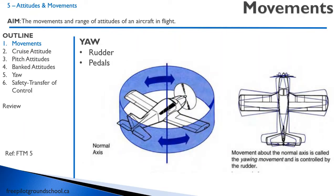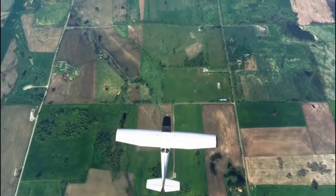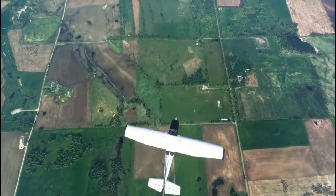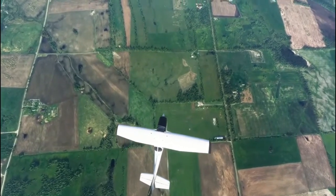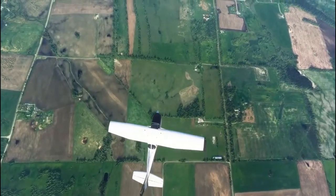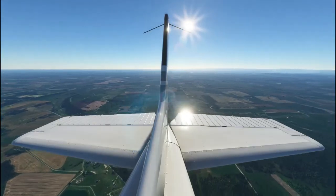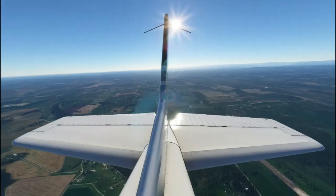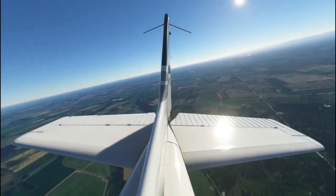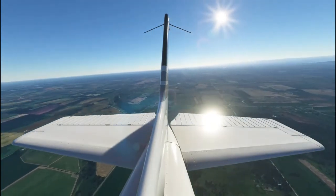The third movement we have is yaw. The rudder on the tail of the aircraft makes the aircraft yaw, and we use the rudder pedals. It moves left and right around the normal or vertical axes, making the aircraft yaw. This is the aircraft yawing left and yawing right around the normal axes. Look at the rudder deflecting left and deflecting right, forcing the tail left and right, and therefore the nose left and right.